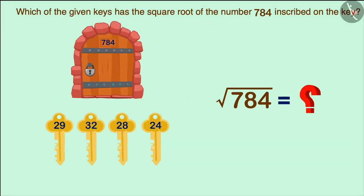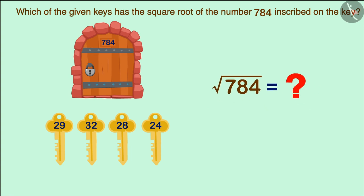Here, we have to find the square root of 784. That is, we have to find a number P whose square is 784.